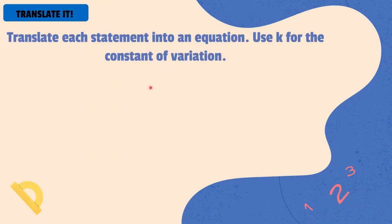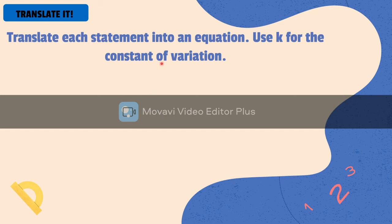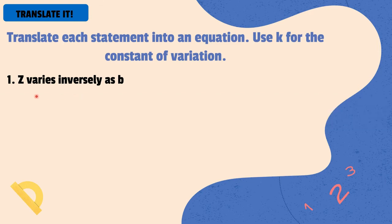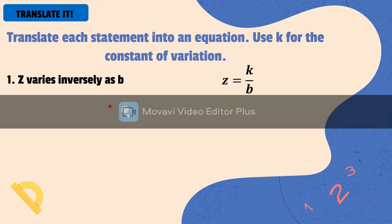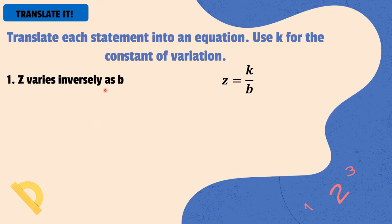Now, let's translate the following statement into equation. So, k is the constant of variation. Number 1, z varies inversely as b. So, the first variable mentioned here is z, then varies as b. This will be our equation. We isolate the first variable mentioned, which is z, is equal to the second variable mentioned divided by k. So, we have z is equal to k over b. This is equivalent to z varies inversely as b.